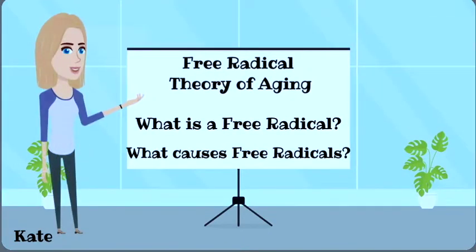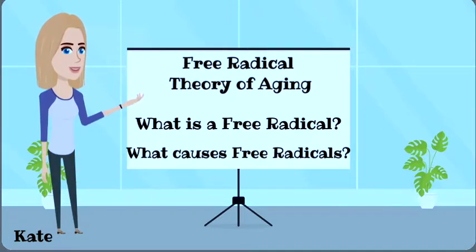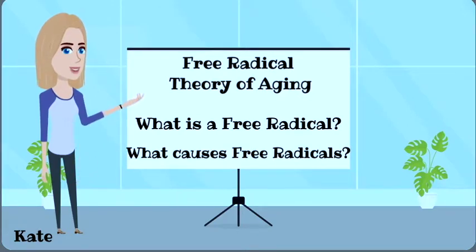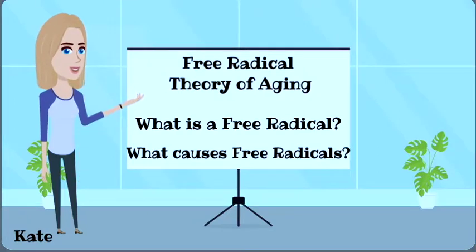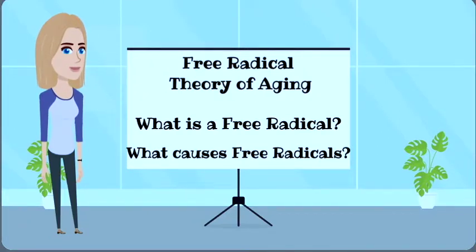What is a free radical? A free radical is an end product of cellular reproduction, and it is a molecule that is short of an electron in its outer shell. This shortage causes the molecule to become unstable, and it goes around trying to steal other electrons, and this causes cellular damage.